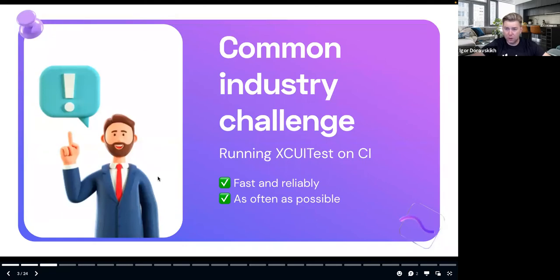Running XCUITest in CI encounters issues of stability because flakiness is the number one problem — how to get tests running at 99% stability at least. And speed: your CI system runs on average for mobile applications anywhere from 15 to 30 minutes. But if you have more than 500 tests written in the XCUITest framework, it's probably going to take you about seven hours. So how are you going to solve this? I'll pass to Julia — she's going to take over this presentation.